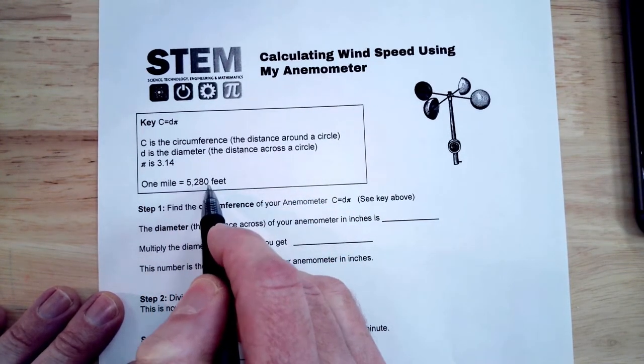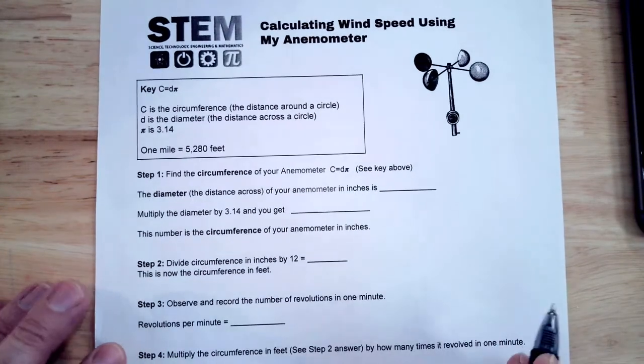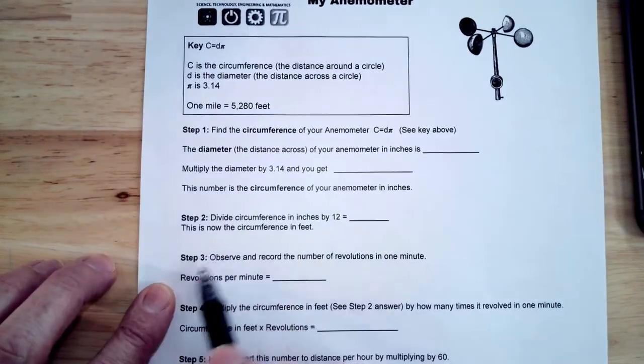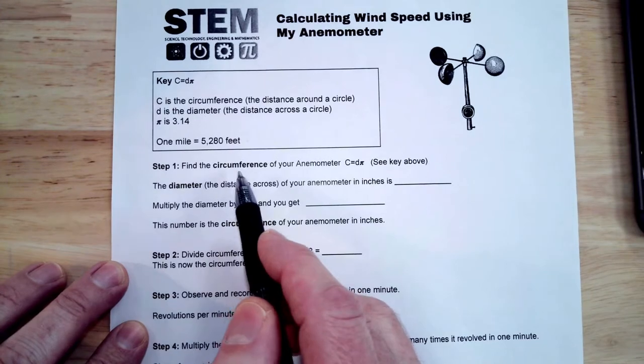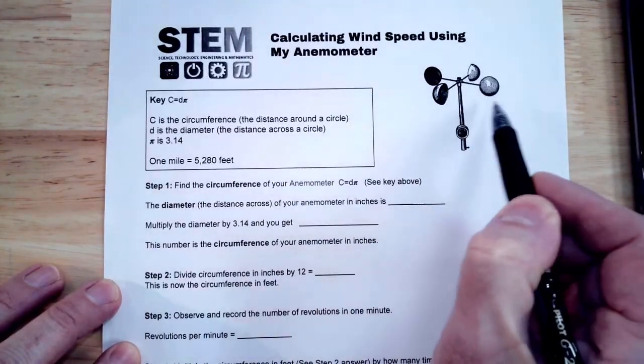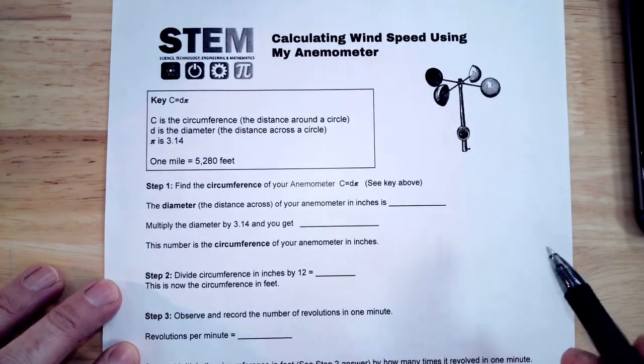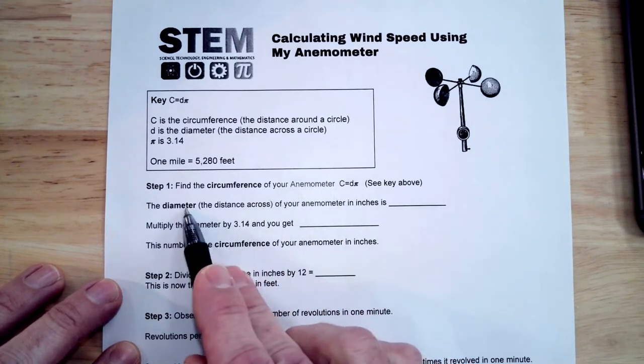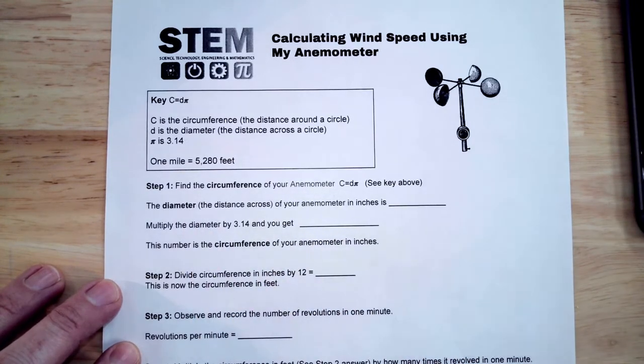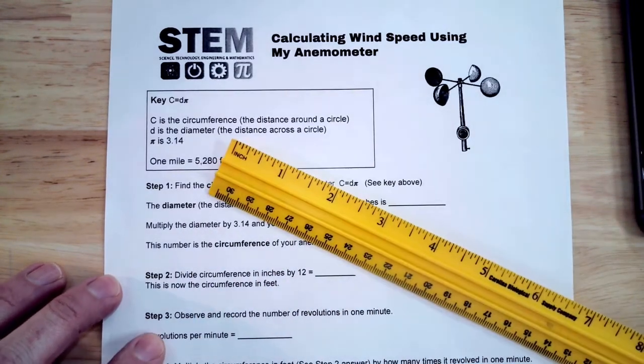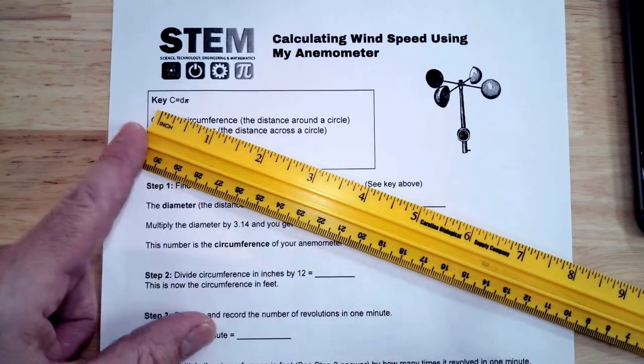One mile is 5,280 feet. The first thing you're going to need to do, step one, again it's all laid out here, but we need to find the circumference, the distance around the anemometer. So we have some math to figure out. Let's measure the diameter, so we're going to measure the distance across your anemometer edge to edge.